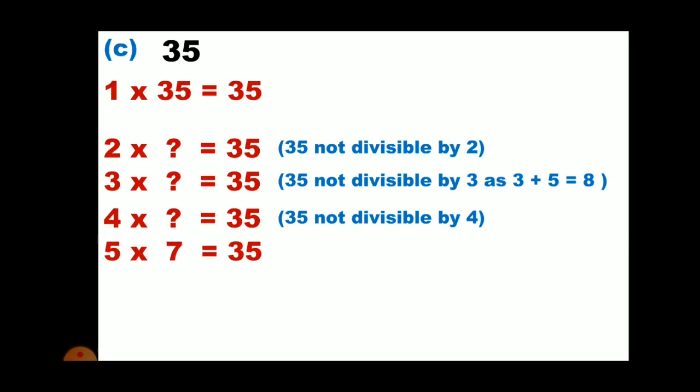Then 5. Yes, it will come in the table of 5 seven times. So 5 into 7 will give 35.